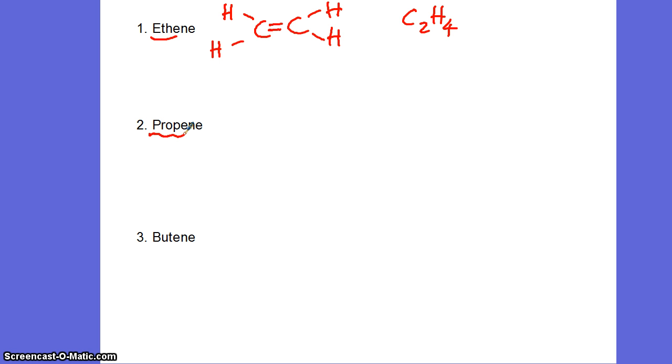Propene is the next in the series. Three carbons. Here's my three. Put a double bond in. You only need one double bond in alkenes. This carbon's already got two bonds, three bond, four bonds. This middle carbon has now got four bonds. And this carbon on the end needs three. C3H6, so that's propene.